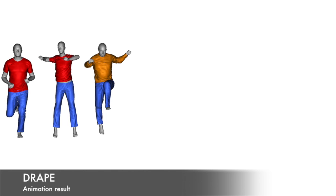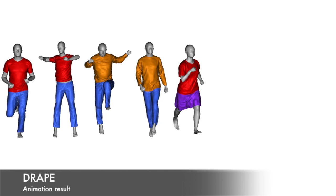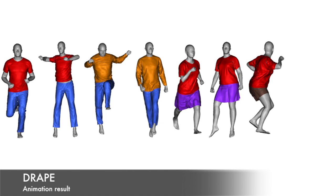Drape is a learned model of clothing that allows people of any shape to be dressed in any pose. Realistic clothing shape variation is obtained without physical simulation, and dressing any body shape is completely automatic.